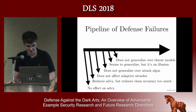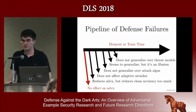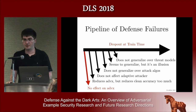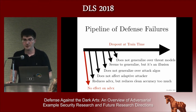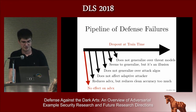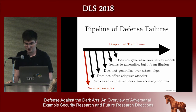I'll walk through an example of each of these failures. One of the first failed defenses at my group at Google was using dropout. We first thought adversarial examples were really just an overfitting problem we had to regularize away. Every neural net person's favorite regularizer is dropout, but a lot of the models we were testing were already trained with dropout — training with dropout doesn't really do much to help.